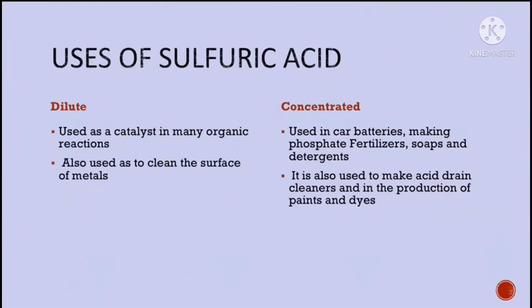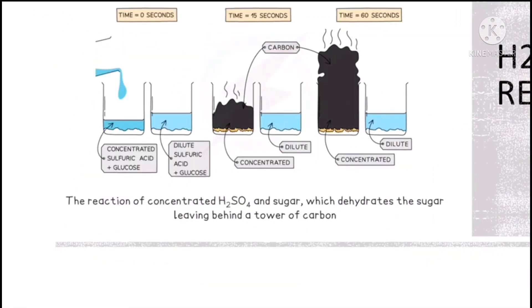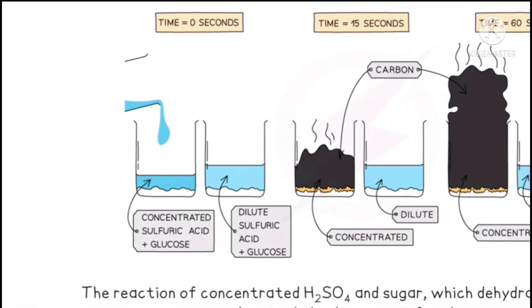What are the uses of sulfuric acid? Dilute sulfuric acid is used as a catalyst in many organic reactions and is also used to clean the surface of metals. Concentrated sulfuric acid is used in car batteries, making phosphate fertilizers, soaps and detergents, acid drain cleaners, and in the production of paints. This is the H₂SO₄ reaction with sugar: a beaker with concentrated sulfuric acid and glucose, and another with dilute sulfuric acid and glucose.